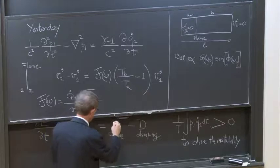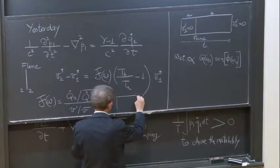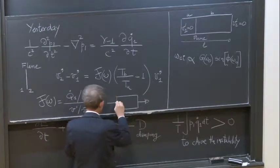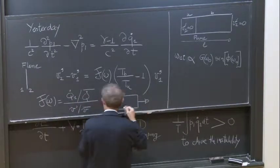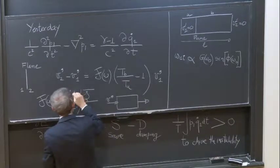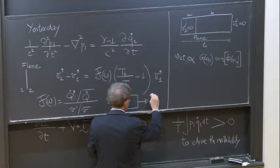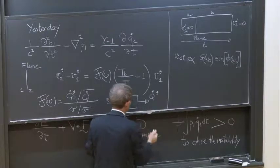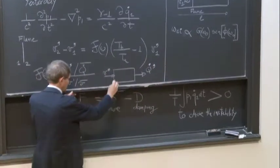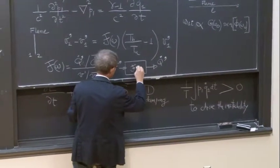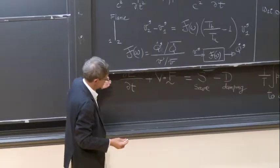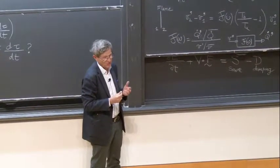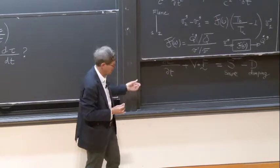The flame is considered more or less like a system. On the input you have the velocity v-prime, and on the output you have q-prime. You characterize this system by its transfer function. Of course, one has to measure that transfer function, or calculate it, or even do the analysis to get the transfer function.